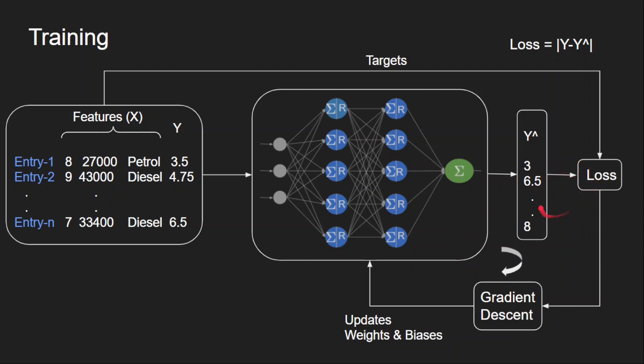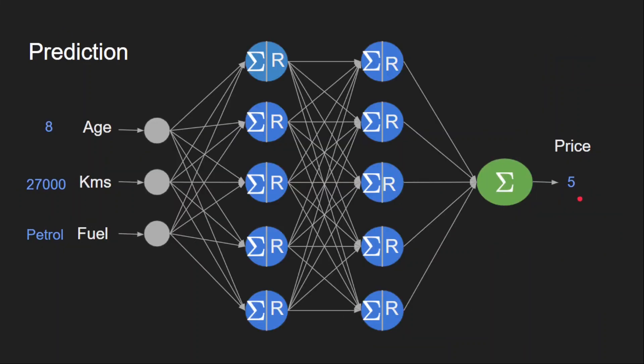Once this total process is done, we will freeze this model and use it for predictions. In this case, this is for predicting the selling price of the car. So, this is how we use neural networks for regression task.